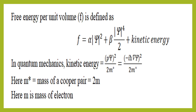For superconductors, the free energy per unit volume is defined as Alpha Chi-squared plus Beta Chi to the power 4 over 2, plus kinetic energy. In quantum mechanics, the kinetic energy is equal to minus i h-bar squared over 2m-star. Here m-star is the mass of a Cooper pair, which is equal to 2m, where m is the mass of one electron.